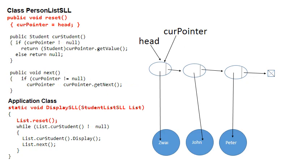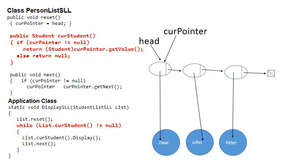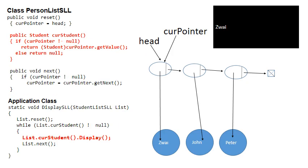Let's start traversing the list from the application class inside method displayLL. The first method called is list.reset, and remember what that does — it has currentPointer pointing to head. The while loop says while currentStudent is not null, which also means while currentPointer is not null — so if we're still going through the list, the while loop condition will be true. Currently currentPointer points to the first node, so the condition is true. currentStudent returns the student linked to currentPointer, so list.currentStudent.display will display the name Zwei.